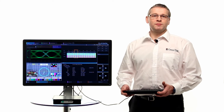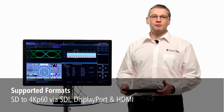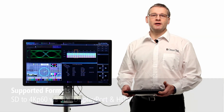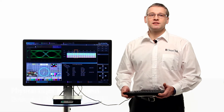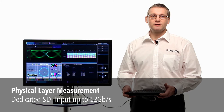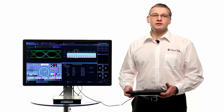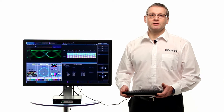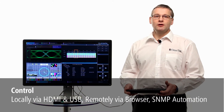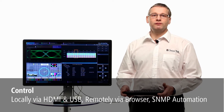The Toolbox supports formats from standard definition to full 4K DCI up to 60Hz via SDI, DisplayPort and HDMI. There's a dedicated SDI input for physical layer measurements up to 12 gigabits per second. The Ultra provides three principal functions: analysis, conversion and generation, and can be controlled locally over HDMI and USB, or remotely via a standard browser interface and via SNMP for test automation.